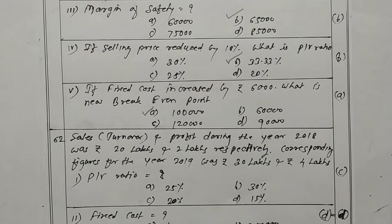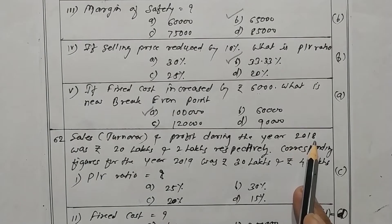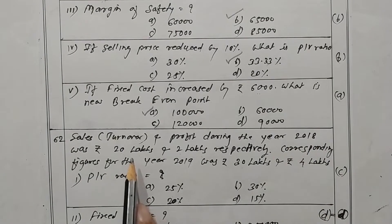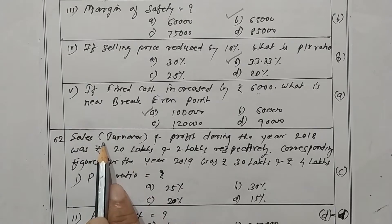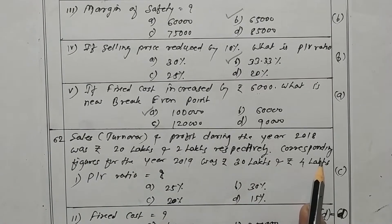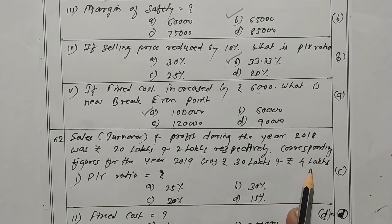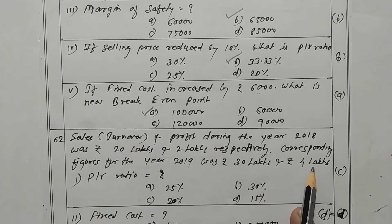Question 62. Sales means turnover and profit. In the year 2018, sales was 20 lakhs and profit was 2 lakhs. The corresponding figures for the year 2019 were 30 lakhs sales and 4 lakhs profit.